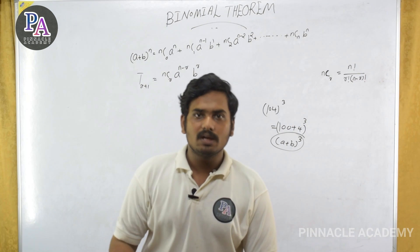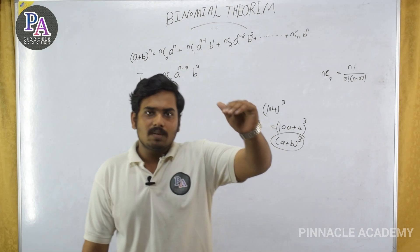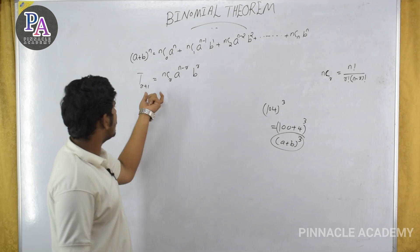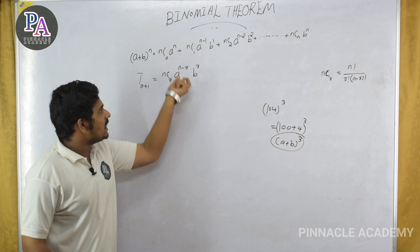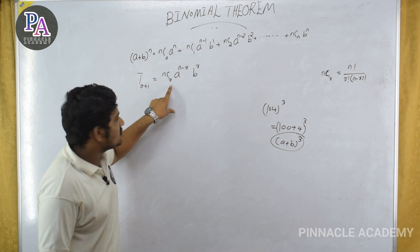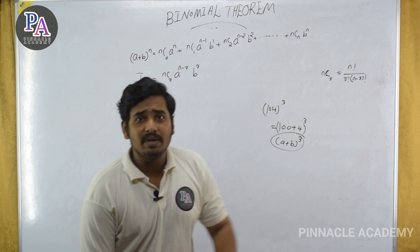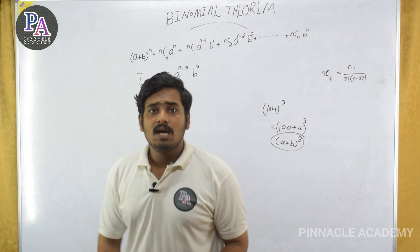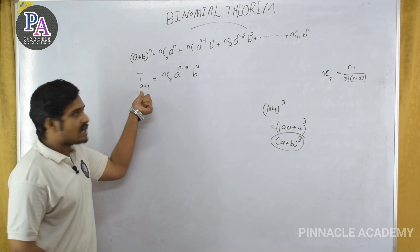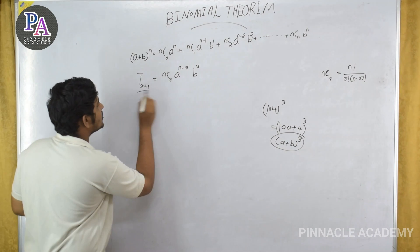So we can use the general term equation: Tr+1 = nCr·a^(n-r)·b^r. Now, if you are given the 40th term, this r equals 39 — because r plus 1 is the term number.